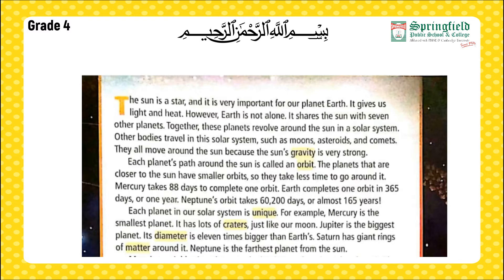Together, these planets revolve around the Sun in a solar system. Other bodies travel in this solar system too, such as moons, asteroids, and comets. They all move around the Sun because the Sun's gravity is very strong. Each planet's path around the Sun is called an orbit. Planets closer to the Sun have smaller orbits, so they take less time to go around it.